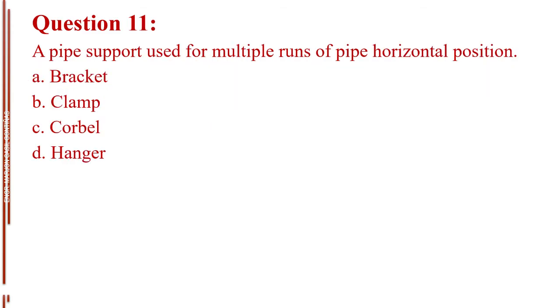Question number 11. A pipe support used for multiple runs of pipe horizontal position. A. Bracket. B. Clamp. C. Corbel. D. Hanger. The answer is Letter A, bracket.